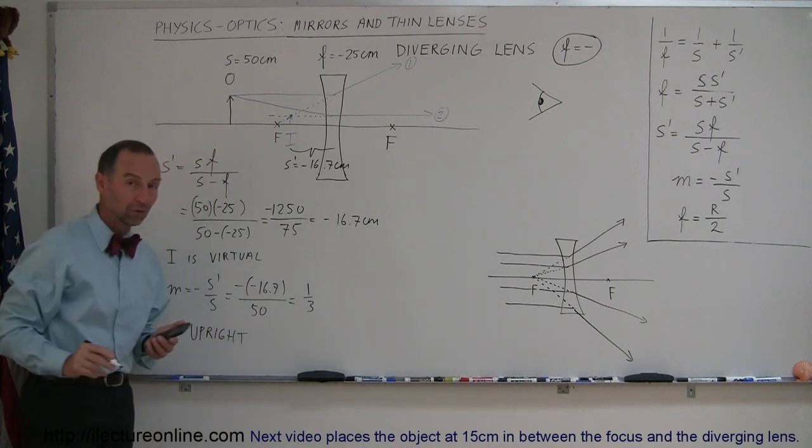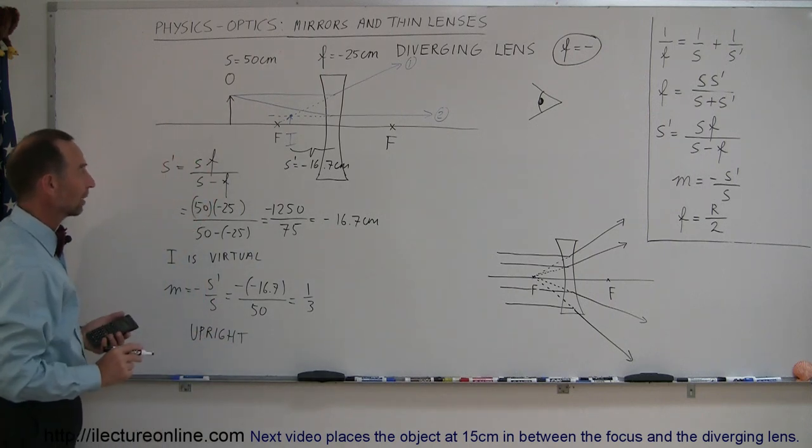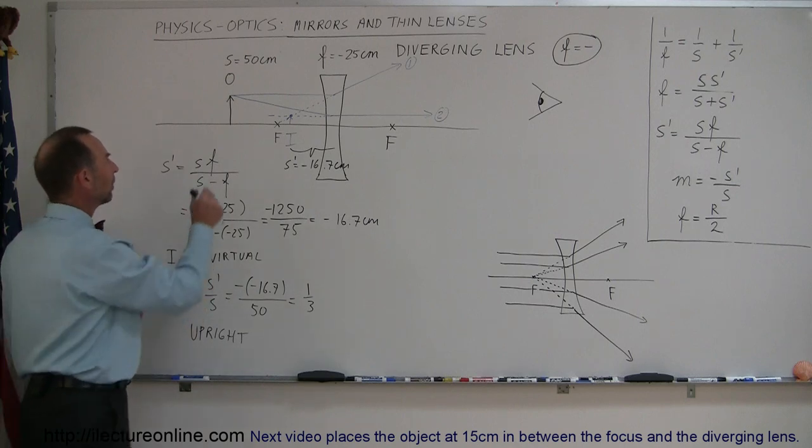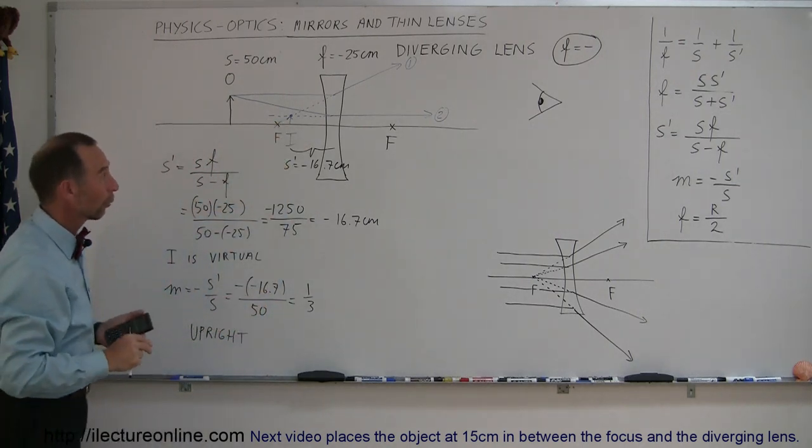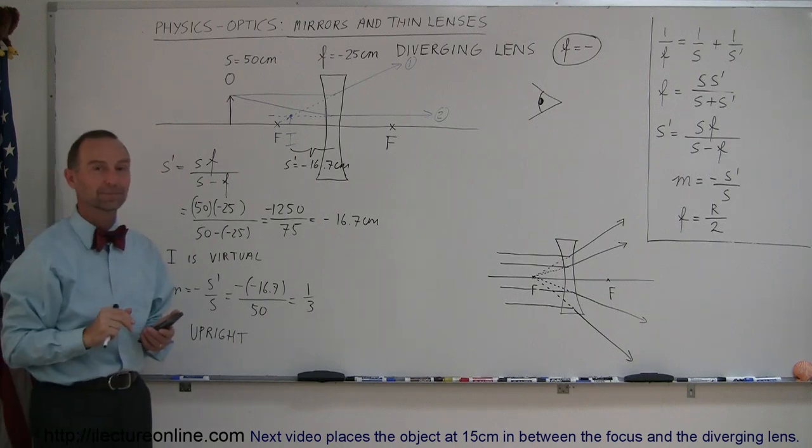And that's how we find the image with a diverging lens. Okay, we're going to try another example, now placing the object inside the focal point to see if that makes any difference for a diverging lens. So that will be on the next video. Thank you.